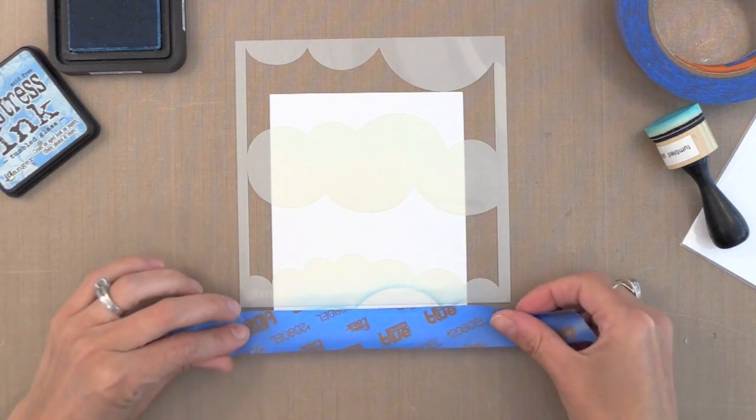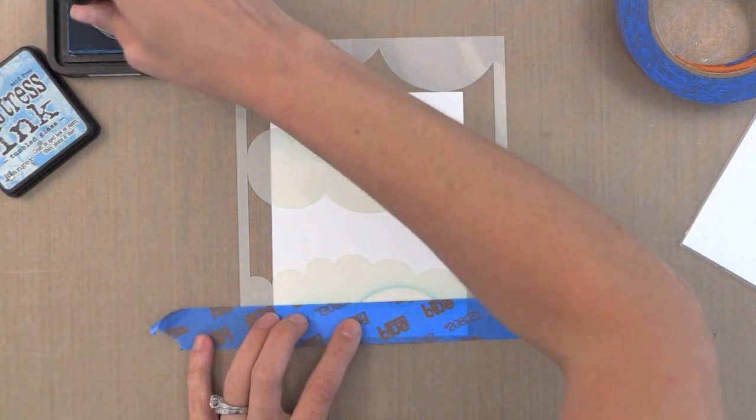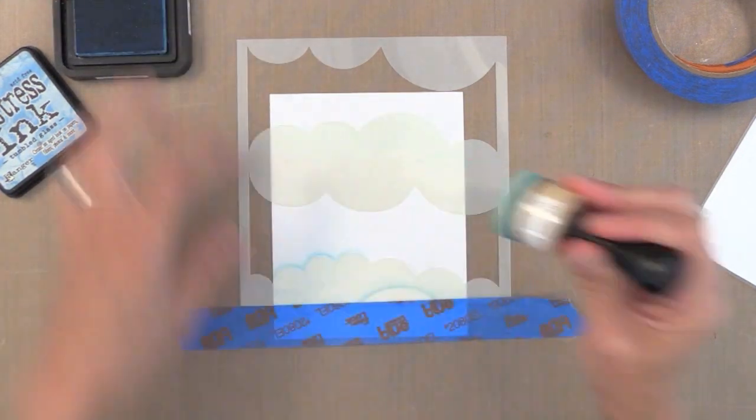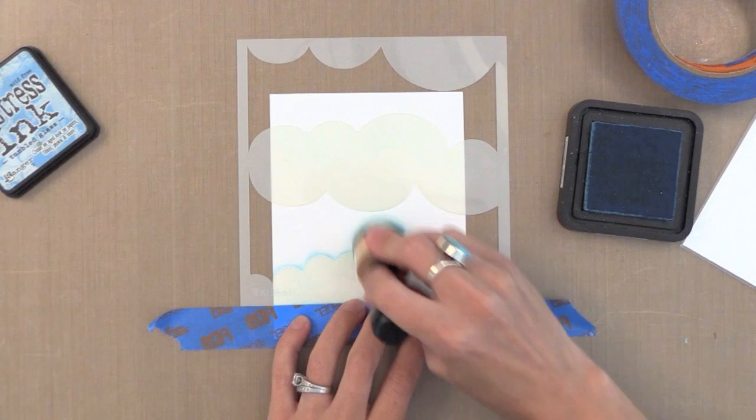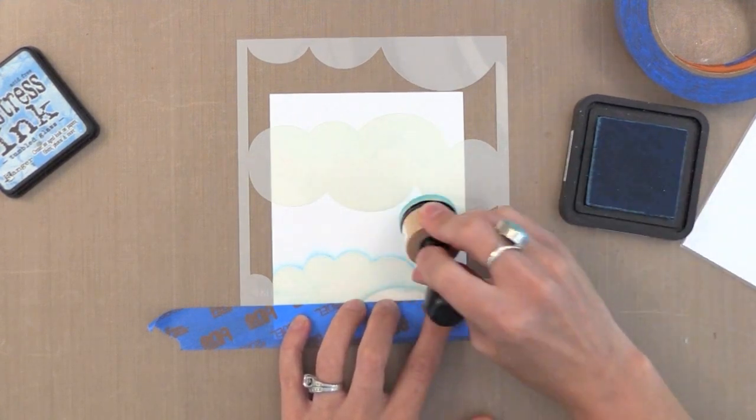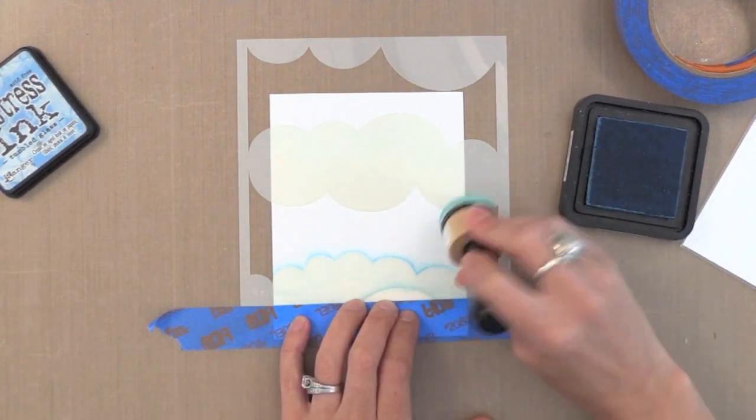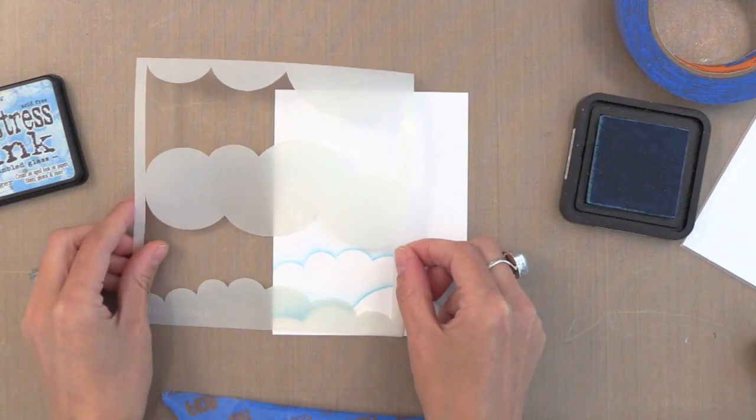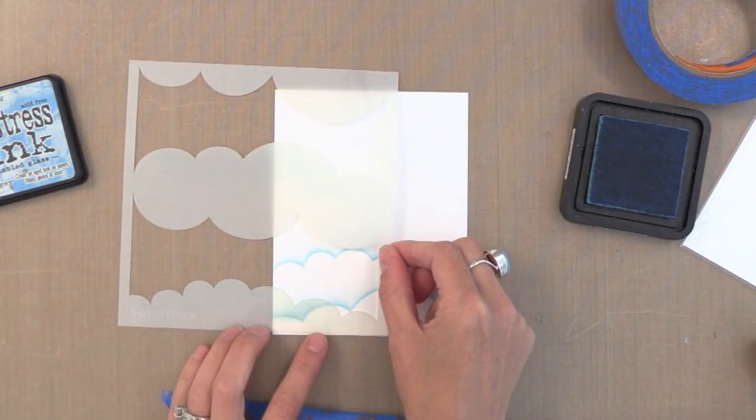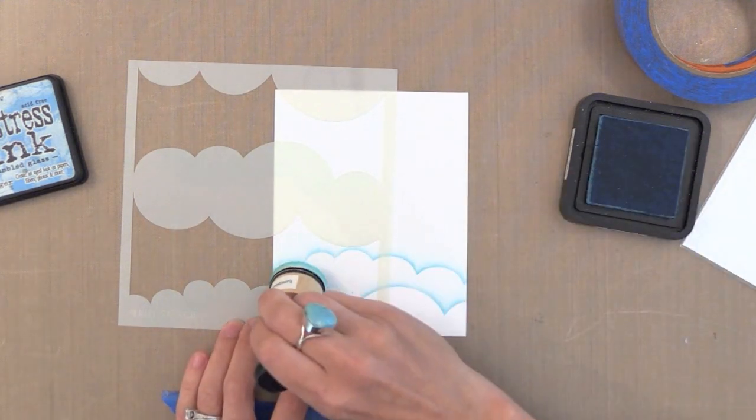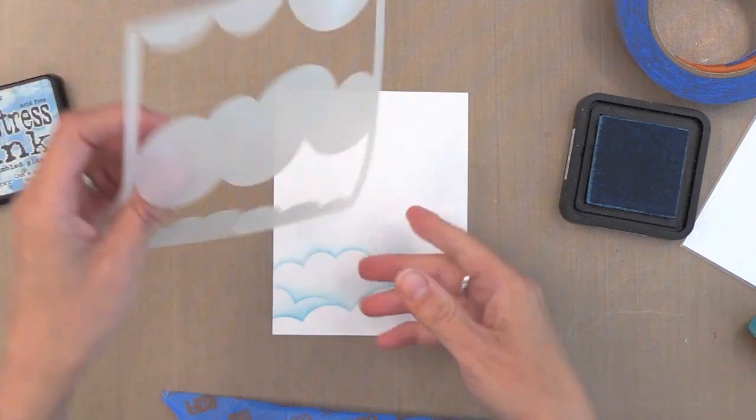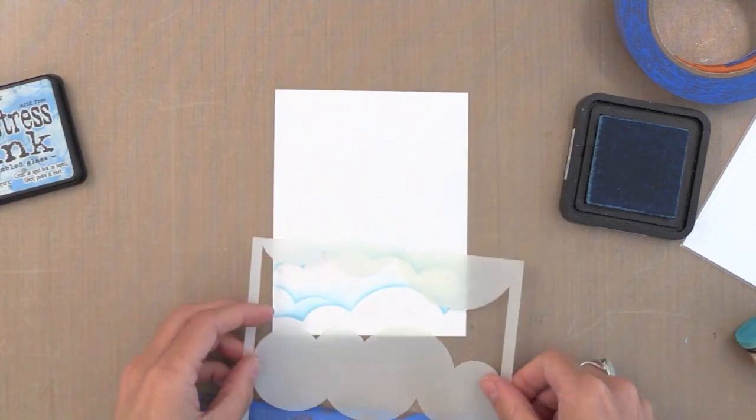Now if you don't have a stencil like this one, maybe you have a cloud die. You could die cut a piece of paper, lay it down and ink off the edges like I'm doing here. If you don't have a cloud die you could just hand cut a cloud. So just hand cut some little puffs of a cloud and you can use that for the same technique. You can also try this with other kinds of inks, but I'll tell you the Distress Inks really work so well for blending.